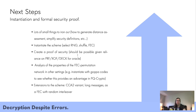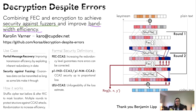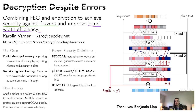Next steps are to iron out the kinks in the difficult security notions, instantiate the scheme, and create a proof of security. If you're interested, here's a summary of the key points. You can check out the git repository — there's a draft containing all the information from here, these slides, and the video will be uploaded as well. Thank you very much for listening.